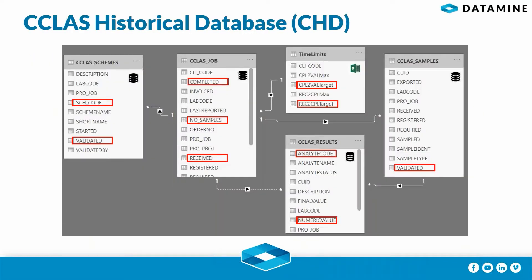Our data source is the CHD. By default, CHD has four tables: the job table, the scheme table, samples, and results. Each of these tables holds relevant data in what we call third normal form. I have highlighted a number of fields that will be used in exercises later. For the purpose of illustrating the power of Power BI, I'm also going to use a simple Excel spreadsheet to augment our report and make our data more meaningful.